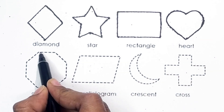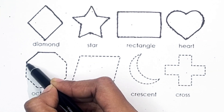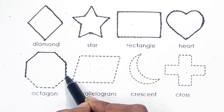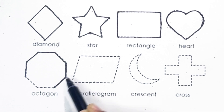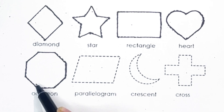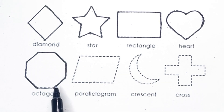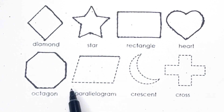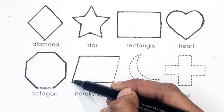A, B, C, D, E, F, G, H, I, J, K, L, M, N, O, P, Q, R, S, T, U, V, W, X, Y, Z. Now I know my ABCs. Next time won't you sing with me?